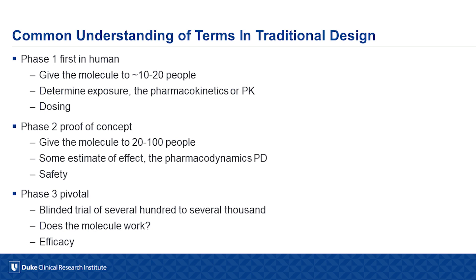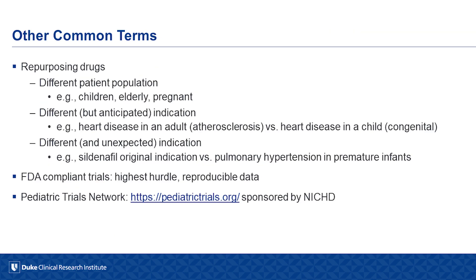In phase three trials — the pivotal trials — people are blinded, randomized, and we give the product to several hundred to several thousand people. We want to see: does the molecule work, and does it work safely?